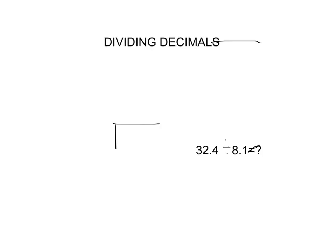We have the numbers 8.1 and 32.4. For the 8.1 you should ignore the decimal point, so pretend it's nothing.